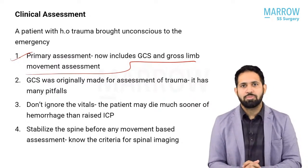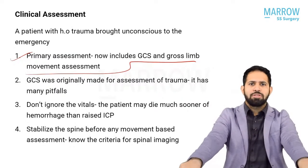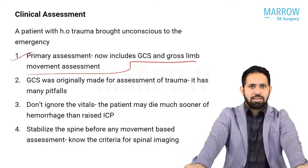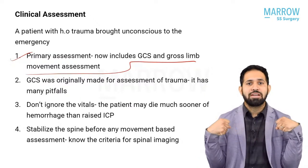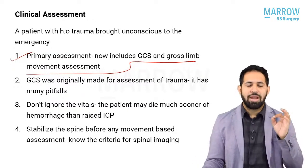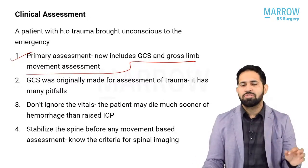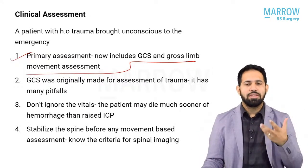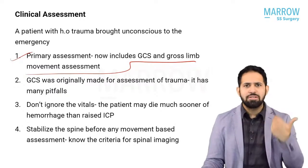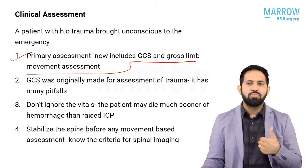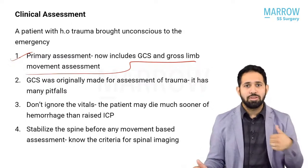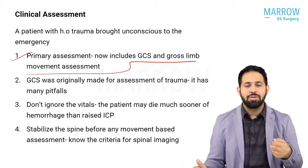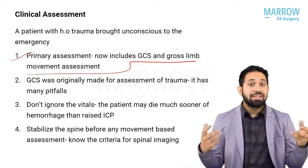M2 is abnormal extensor posturing — hands internally rotated, wrists palmar-flexed, legs extended. In M3, the hands have abnormal flexor posturing. For GCS stimulation, you stimulate above the shoulder — supraorbital pressure or trapezius pinch — because below-shoulder stimulation like a chest rub is not recommended due to the Lazarus sign, where spinal reflexes can confuse your GCS assessment.